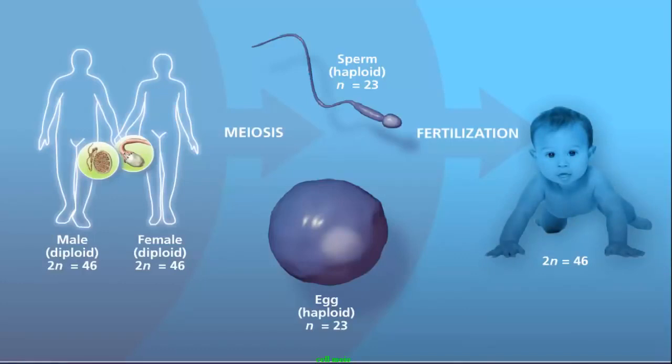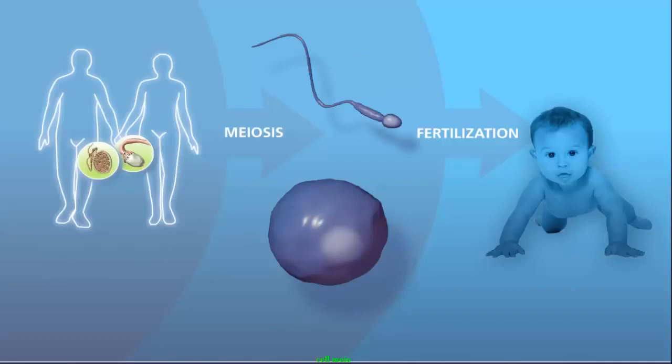Because men and women produce millions of gametes, and the selection of gametes in fertilization is random, this contributes to genetic diversity. This explains why a child isn't identical to either parent.